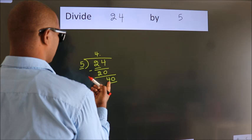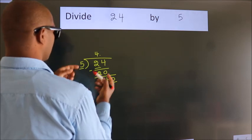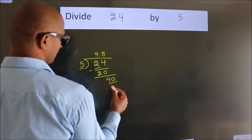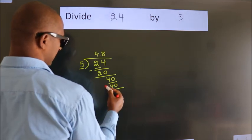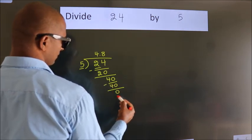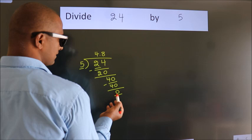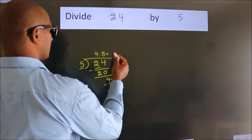When do we get 40 in the 5 table? 5 eights, 40. Now we subtract. We get 0. We got remainder 0, so this is our quotient.